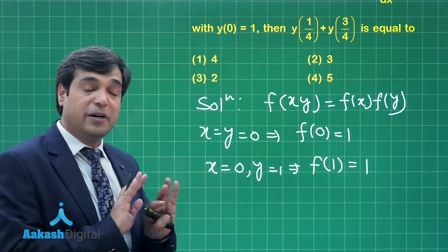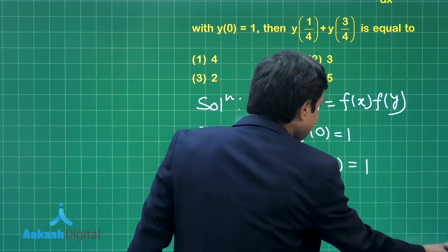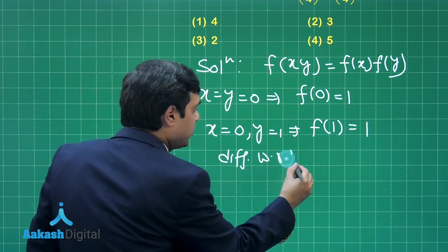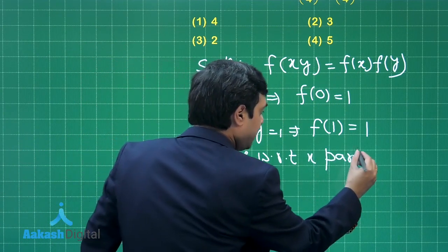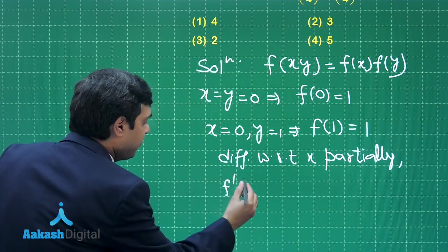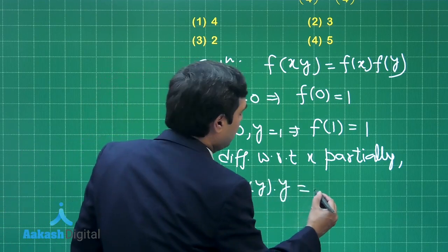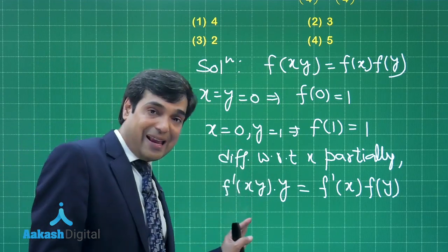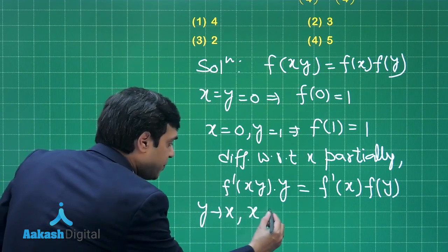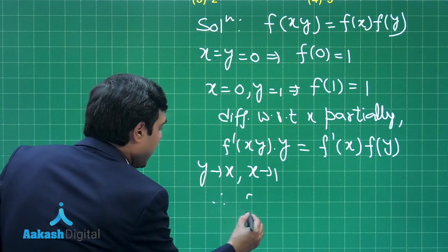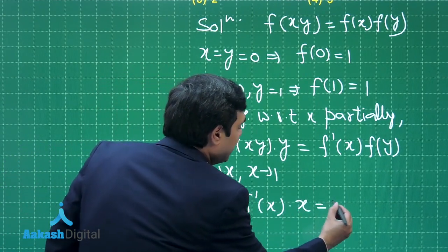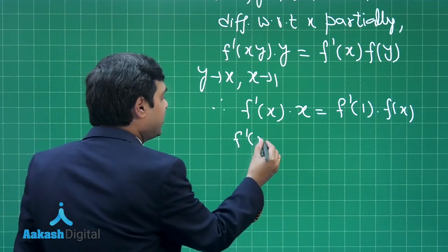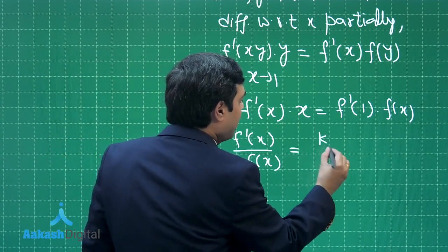Differentiating f(xy) = f(x)·f(y) with respect to x, keeping y constant, we get y·f'(xy) = f'(x)·f(y). Substituting y replaced by x and x replaced by 1, we get f'(x)·x = f'(1)·f(x). The general approach for this type of question gives us f'(x)/f(x) = f'(1), which equals a constant k.